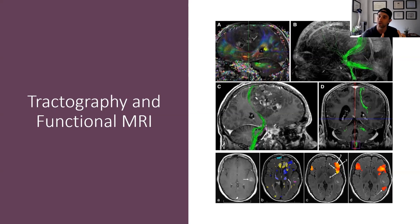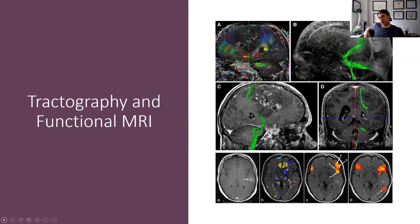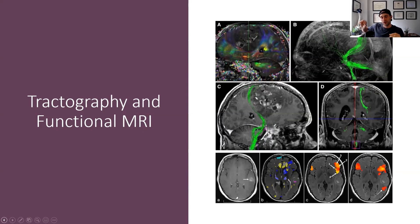With tractography — specifically diffusion tensor imaging — we're able to see the white matter tracks, which are the telephone wires of the brain; this is how things communicate. The technology is getting better. Right now you have to know what the functional tracks are, place your seeds, and map it out, but with updates in artificial intelligence and machine learning this is becoming semi-automated. You can take those images and put them on your navigation system, so in the operating room you have millimeter accuracy and know exactly where you are, without compromising these tracks — because if you cut a telephone wire, there's no more communication.